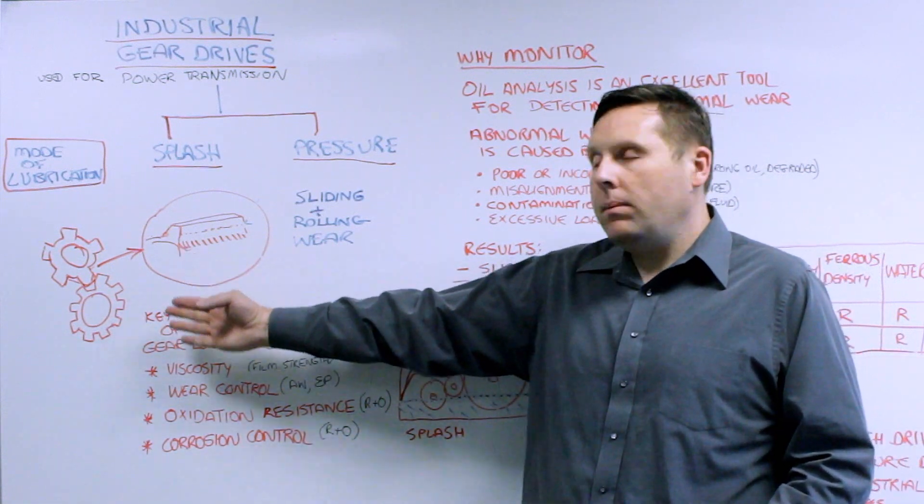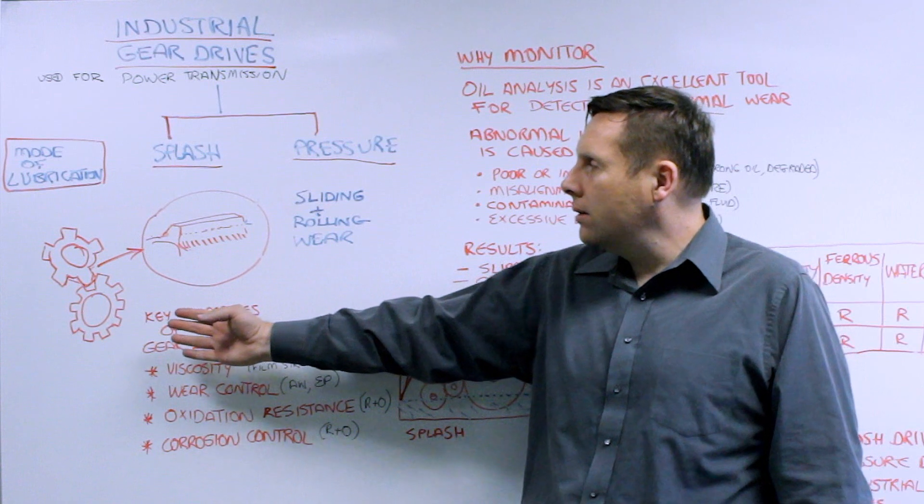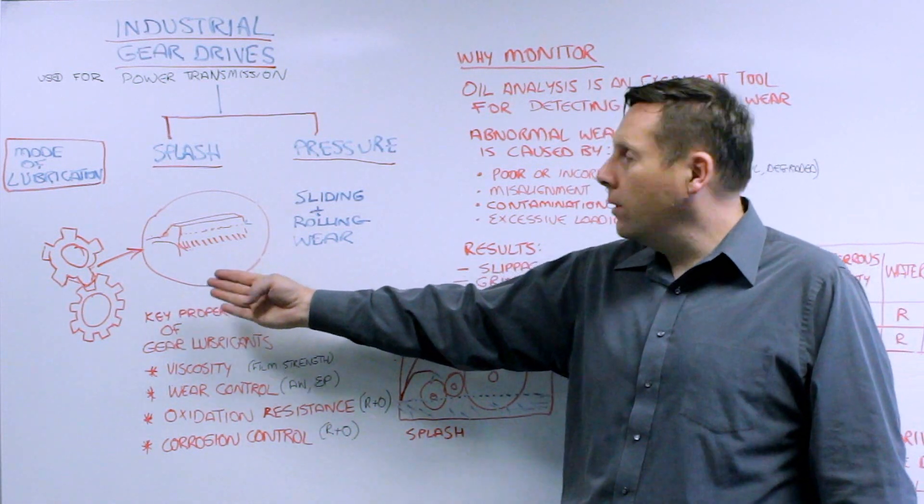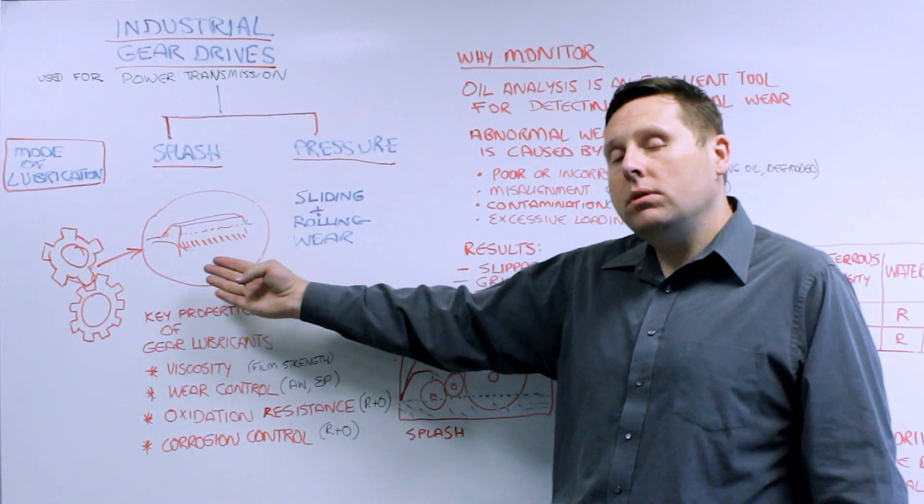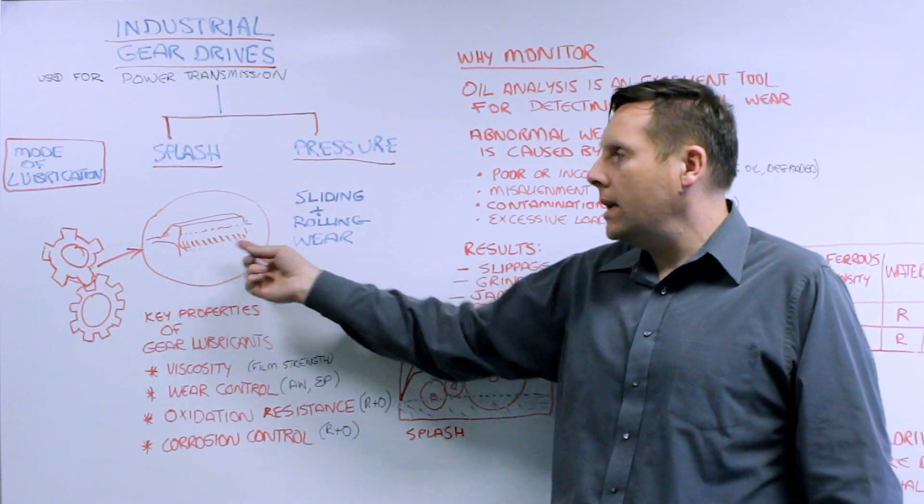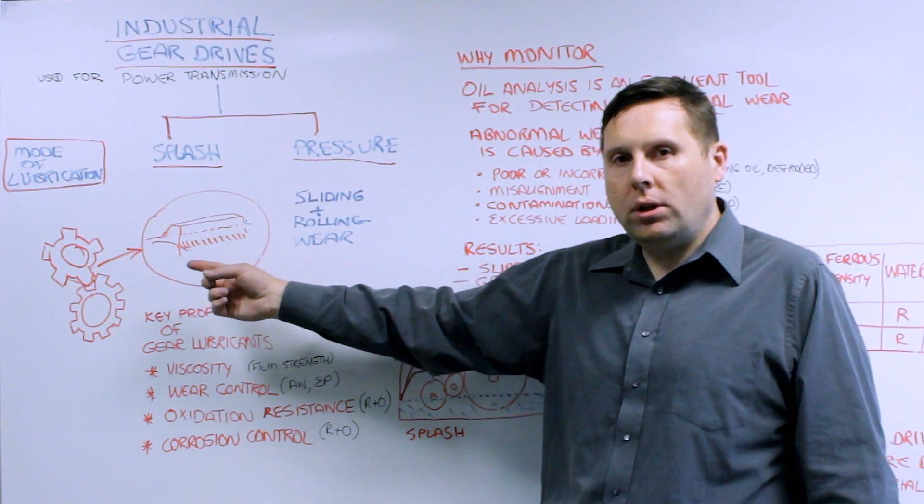They can be different types of hardened gears, nitrided carburized gears. What happens is that during the power transmission there's always going to be some amount of wear being produced because there are sliding and rolling wear contacts when you have gear teeth meshing together.